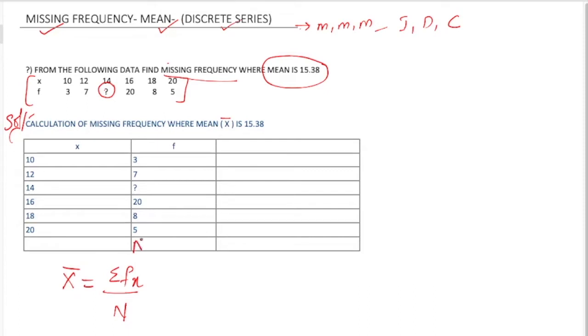If you are adding frequency you'll get the value of n. So add 3 plus 7. Here we don't know the number we need to find, so we are keeping that question mark as x.